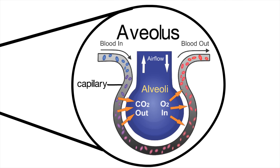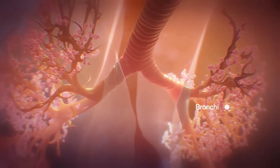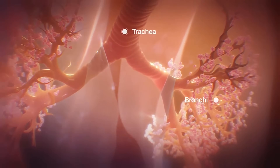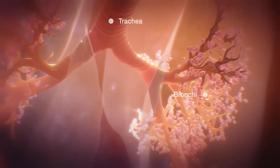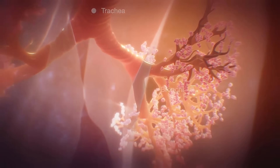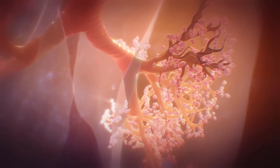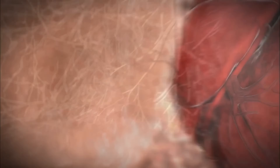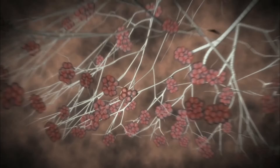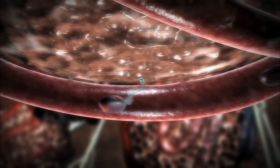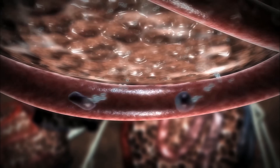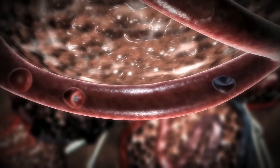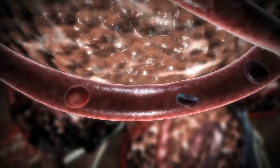Looking inside the lungs, we can see the trachea where air first enters, then it splits into the bronchi, then the bronchioles, and then the tiny air sacs called the alveoli. Zooming into the alveoli, we can see that the capillaries are very close to the thin alveoli walls, allowing oxygen to diffuse through easily into the red blood cells, which become oxygenated.